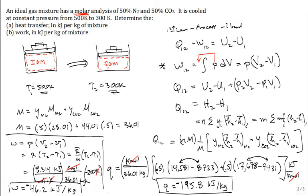Any questions on that problem? Now we can move into the last half of this chapter — the psychrometric applications. What is psychrometrics? Psychrometrics or psychrometry or hygrometry is a term used to describe the field of engineering concerned with the physical and thermodynamic properties of gas-vapor mixtures. The real mixture of interest is dry air and water vapor — moist air.